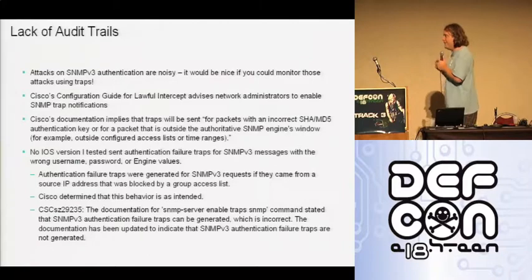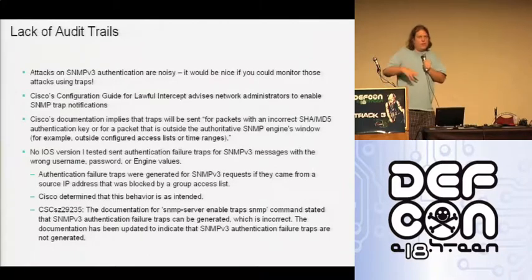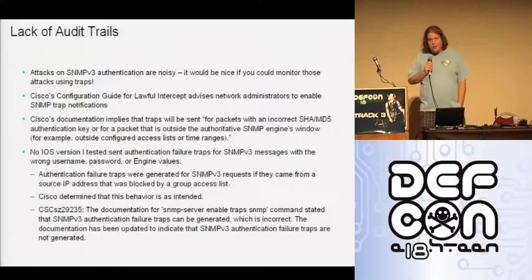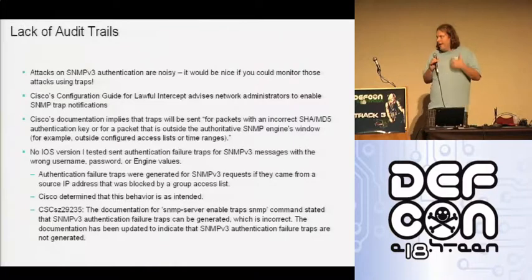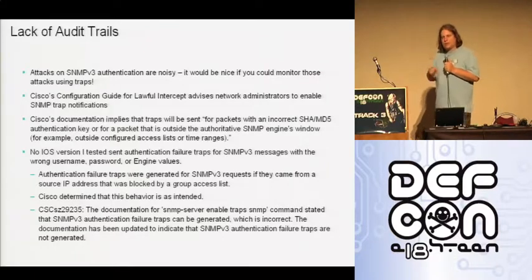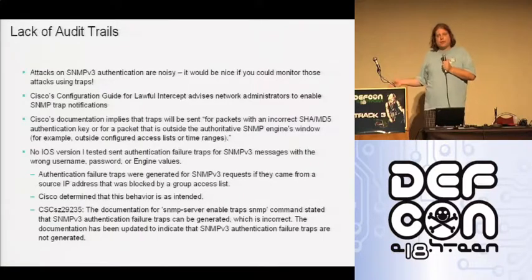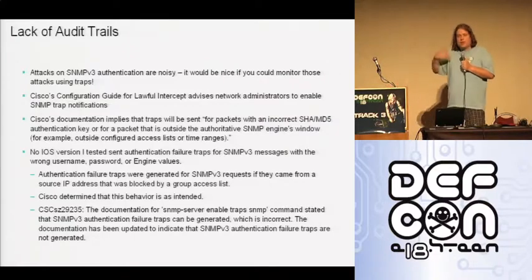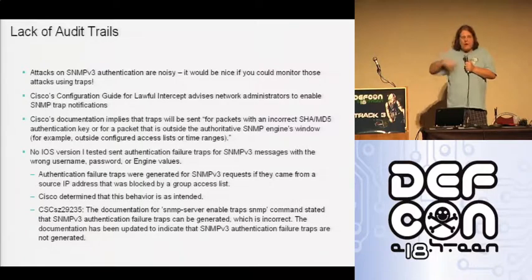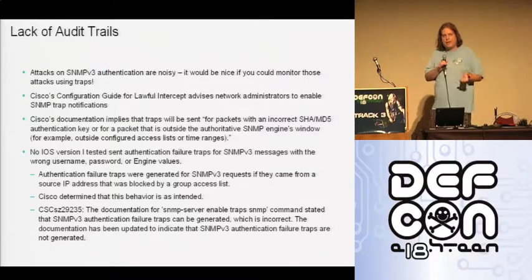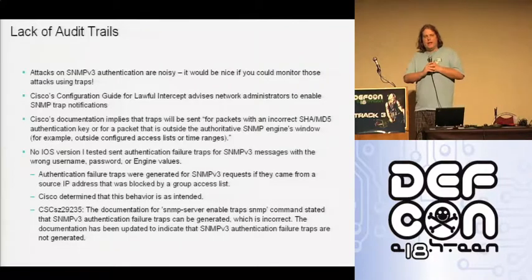You might think that all that brute-forcing would be caught because it would generate a bunch of logging information. Well, it turns out it doesn't. In SNMP v2 they had community strings, and if you configured your router to send authentication failure traps, it would generate a trap when someone used the wrong community string. The documentation strongly implies this is also true for SNMP v3 — that if you have those traps configured and someone's trying to crack your username and password, those traps would be generated. But it turns out it actually doesn't work. I tried a bunch of different IOS versions and no traps or informs are generated when bad usernames and passwords are used.